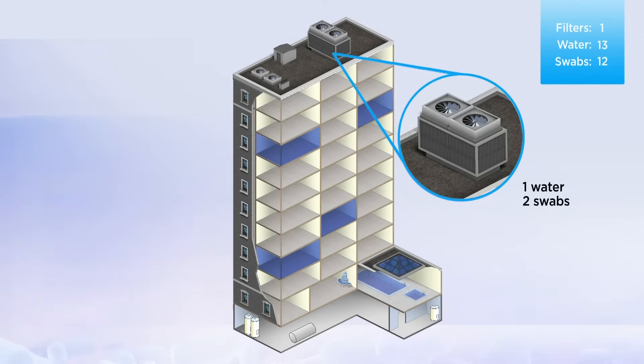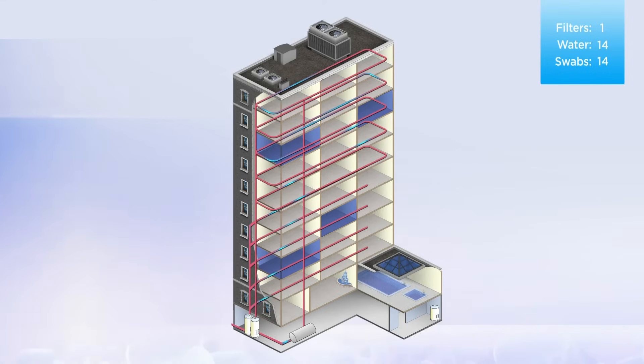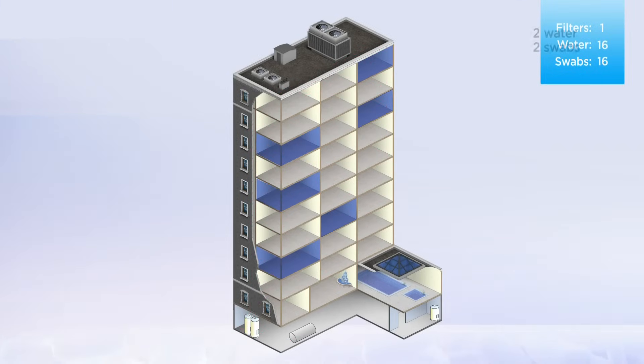Since there is a cooling tower on the roof, all case patients could have had exposure to it, so it should be sampled as well. To ensure representative sampling of the premise plumbing, you should also take some samples that are close to and far from the hot water heaters on the upper floors. In this example, we'd sample on the 6th and 10th floors.